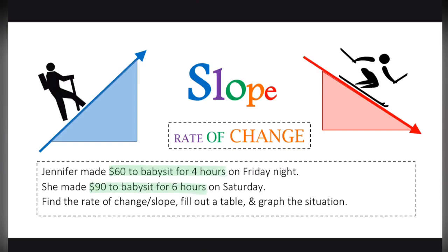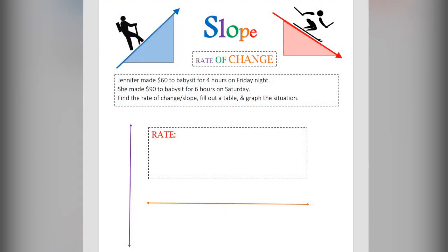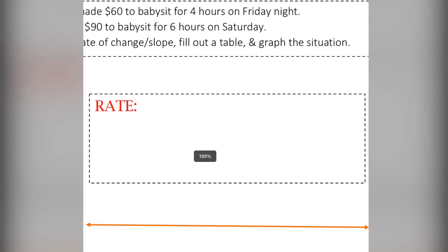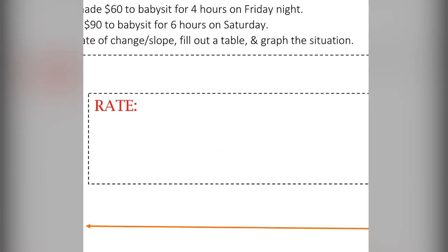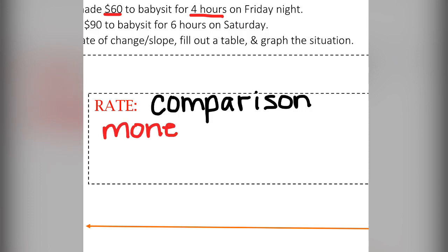Here I'm highlighting the important parts about what Jennifer makes for babysitting. The reason I'm highlighting this is because slope, like we said, is a rate. A rate is a comparison. The question is, what are we comparing in this problem? Well, we're looking at how much money she's making compared to how many hours she worked.